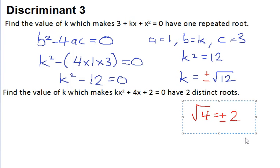So if I just get rid of this, that means that this equation here, when k is the square root of 12 or when it's minus the square root of 12, then the equation does have one repeated root, which means that it only touches the x-axis at one point.